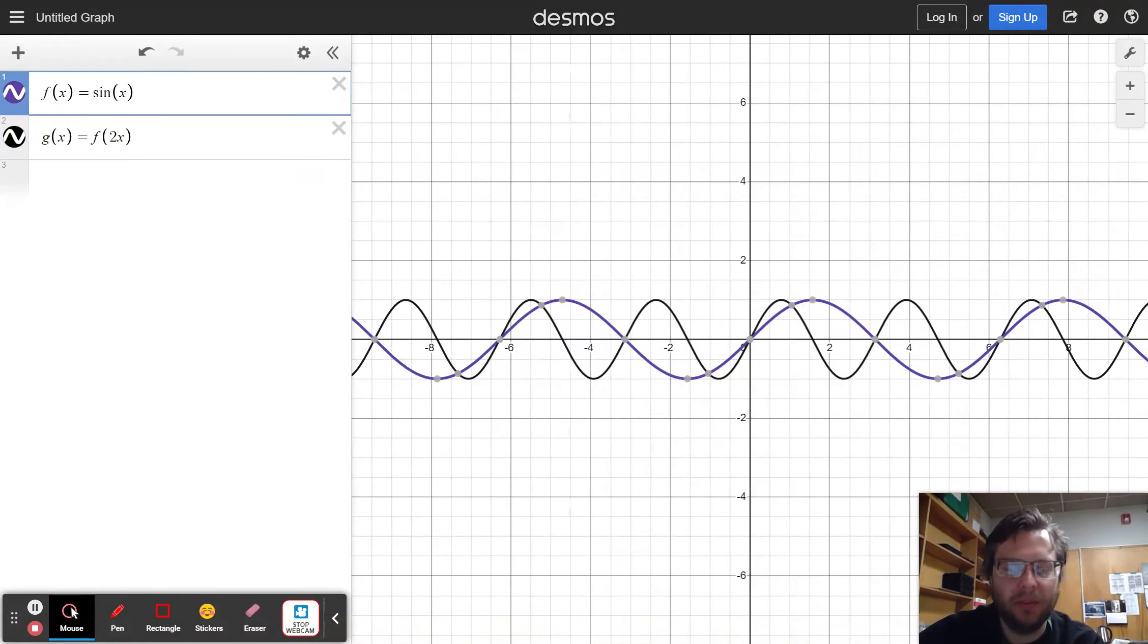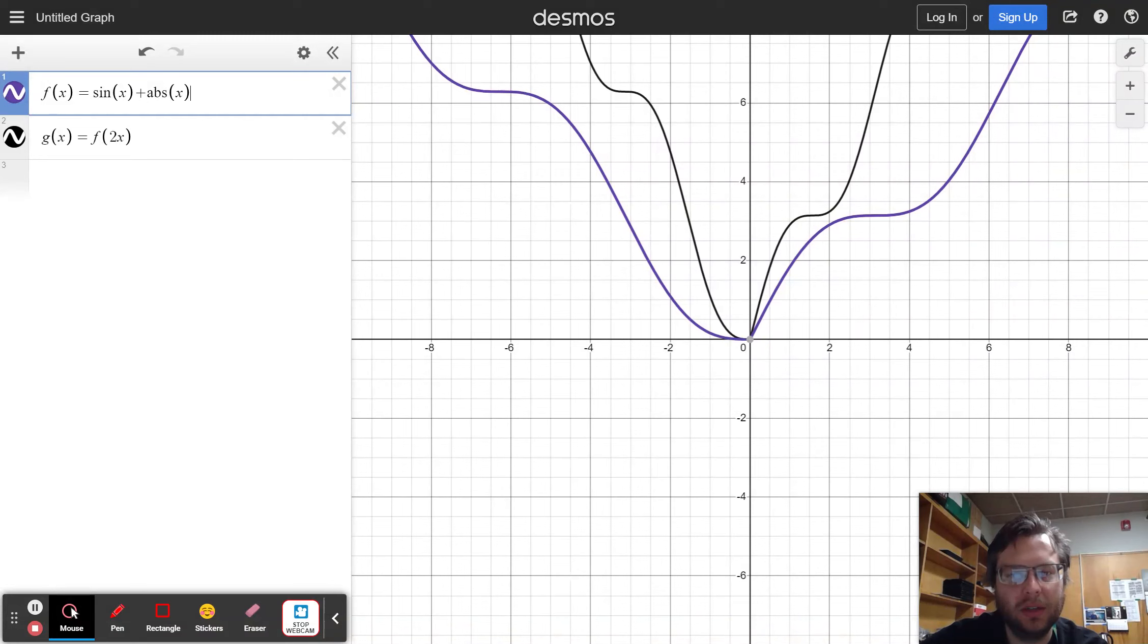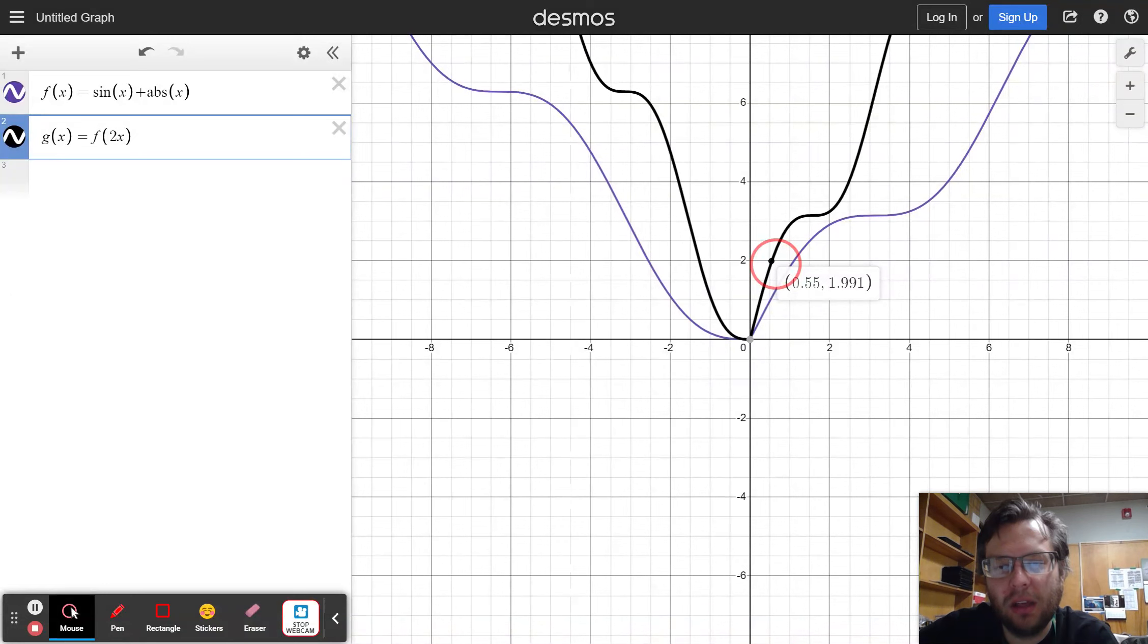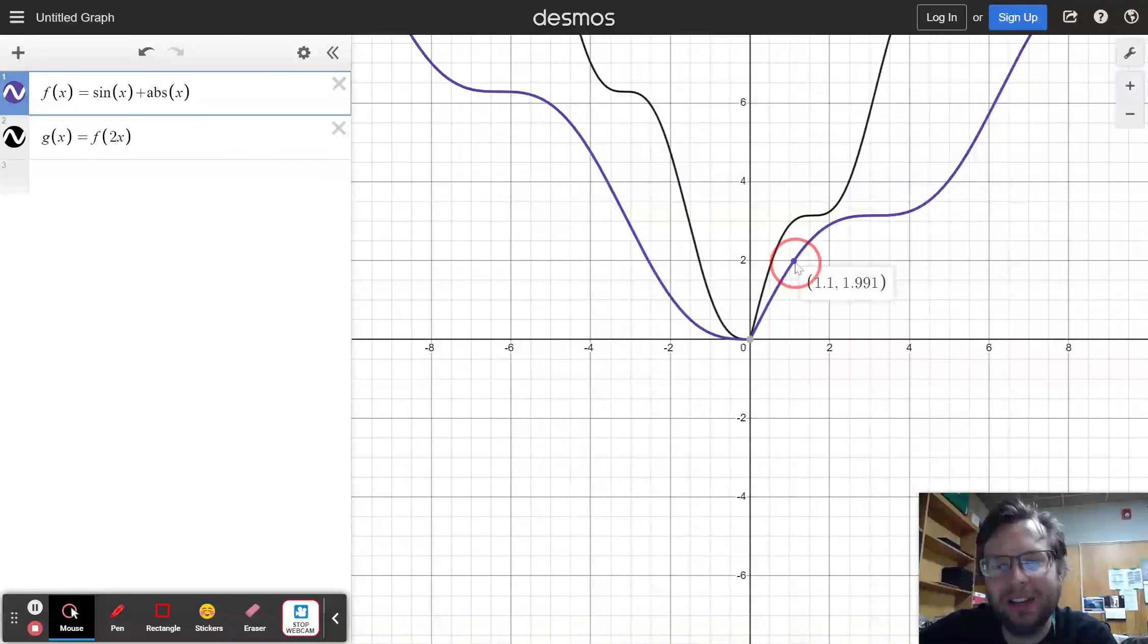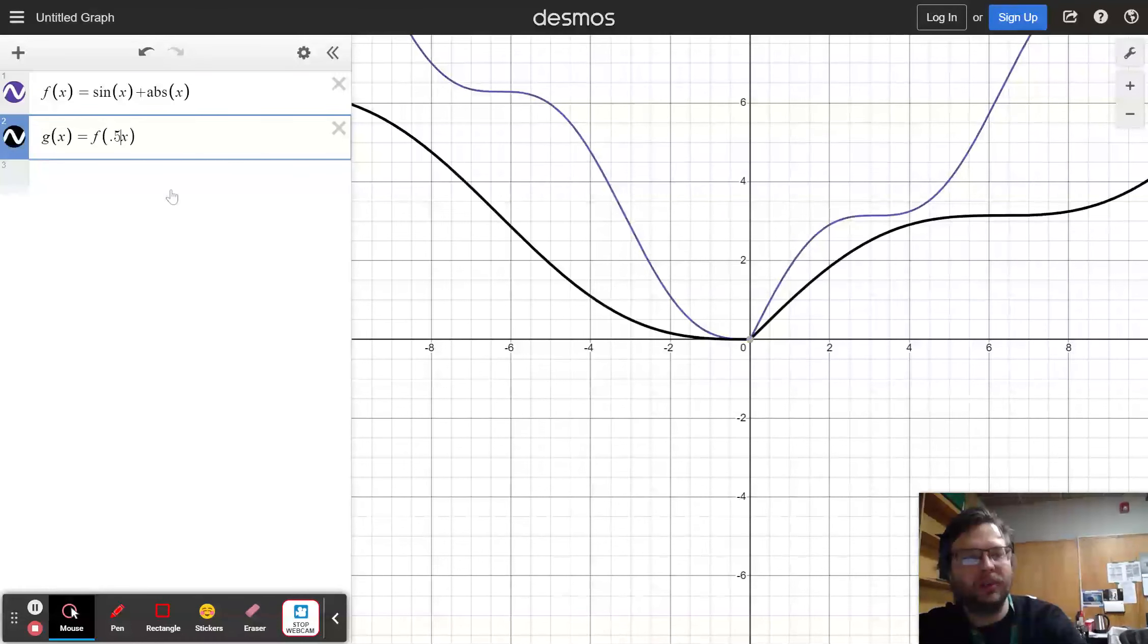We don't use the word wavelength for more complicated functions. This one. But you can see that the same thing is true. That every point on the black graph is twice as close to the y-axis as the corresponding point on the purple graph. You can choose a particular example, like this point right here, 0.55 and 1.99. If I go 0.55 times 2, I get 1.1. So I know that this point right here is going to be 1.1, if I can get it to land on it, and 1.99. So you get the same y-value on the purple graph when you are twice as far from the y-axis as on the black graph. If I change this to 0.5, now it is twice as wide.